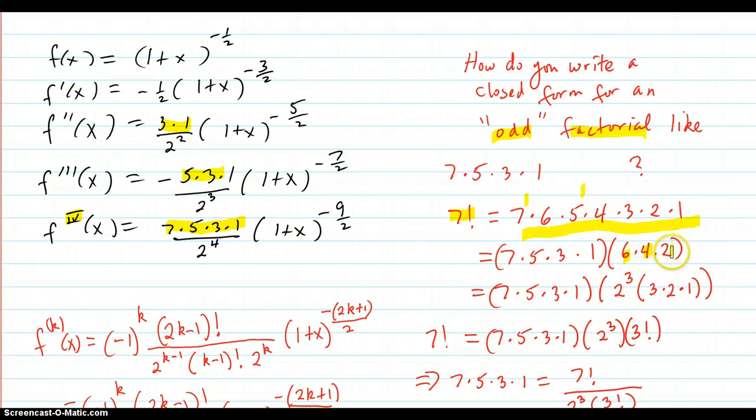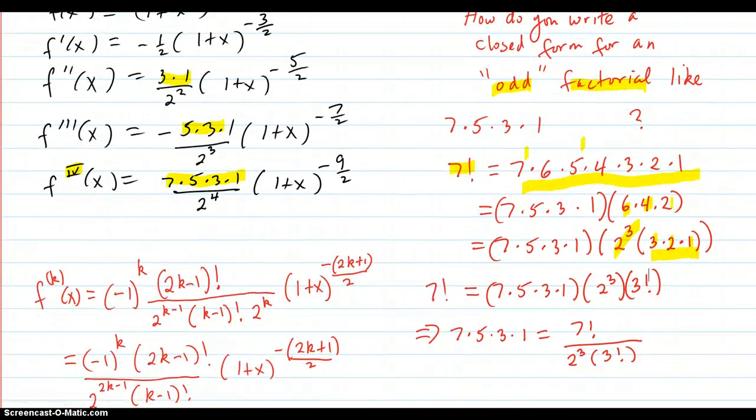Then you realize that you can factor out a 2 out of each one of these here, 6, 4, 2 to get 3, 2, 1, and there's a 2 out of each one. There's 3 of them, so it's 2 to the third times 3 times 2 times 1. So in other words, 7 factorial is equal to this odd factorial times 2 to the third times 3 factorial. So if you divide it over by 2 to the third, 3 factorial, you get your 7 times 5 times 3 times 1. So this odd factorial can be written this way.